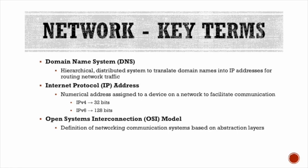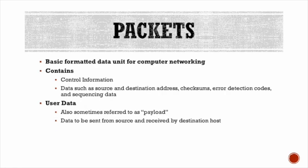We'll do a deeper dive into the OSI model in the next couple of slides. A packet is a basic formatted protocol data unit for IP networking. It contains control information such as source and destination address, checksums, error detection codes, and sequencing data. User data — sometimes referred to as a payload — is the raw data to be sent from the source and received by the destination host. A packet is usually broken down into three sections: header, data, and trailer. In dealing with network traffic, you'll most likely encounter analyzing a PCAP file, which is a packet capture file normally generated by a protocol analyzer such as Wireshark.